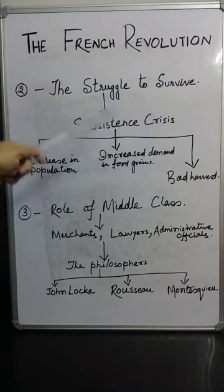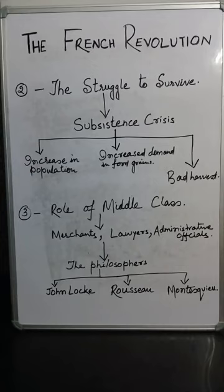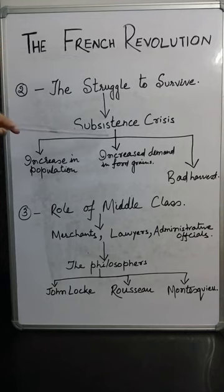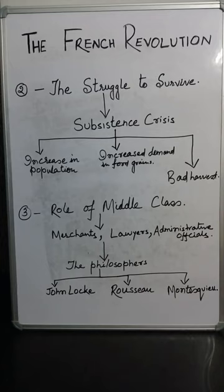That is the rise of subsistence crisis. Now, what is subsistence crisis? Subsistence crisis is considered one of the main reasons for the rise of the French Revolution. Subsistence crisis means an extreme situation in a country where the basic means of livelihood are endangered — in simple terms, a severe crisis of food, clothing, etc.